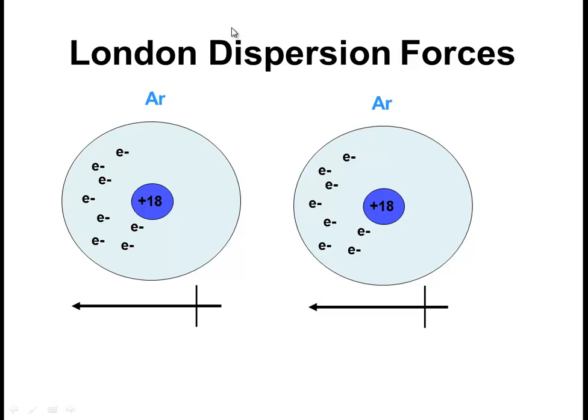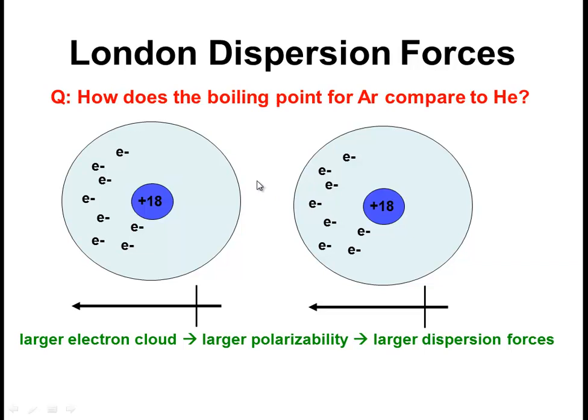Now let's look at another example where London dispersion forces are operating. So let's look at two argon atoms. Now with argon, argon has 18 electrons. And so when these electrons start sloshing back and forth during electron correlation, it's going to lead to a bigger dipole. They'll be instantaneous dipoles, but they'll be bigger than they are with helium. And so that's going to lead to a larger dispersion force, a larger force of attraction.